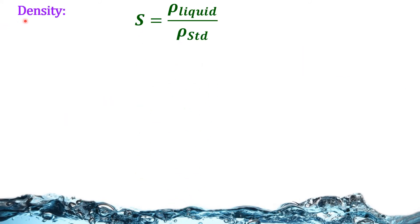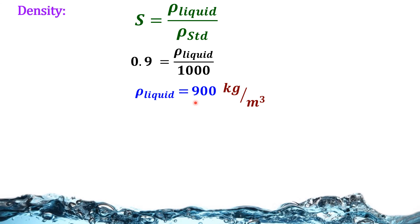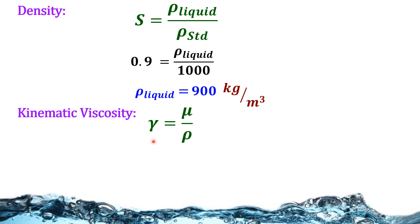Density: specific gravity S = density of liquid / density of standard liquid. S is given as 0.9, and the density of the standard liquid is 1000 kg/m³. Substituting, we get the density of the liquid as 900 kg/m³. Kinematic viscosity = mu / rho. We must substitute mu in N·s/m².